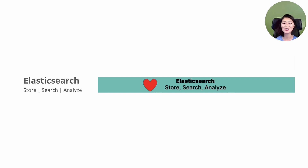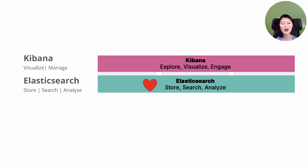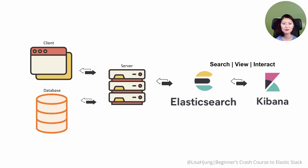Data is so much easier to understand if you could visualize it, and this is where Kibana comes in, which helps you to visualize and manage your data. Think of Kibana as a web interface to the data stored in Elasticsearch. It allows you to search, view, and interact with your Elasticsearch data. If you had a question about what is the most popular product or what was our revenue last month, you would enter relevant data in Elasticsearch, then from Kibana send requests to Elasticsearch to get and analyze the data you want.